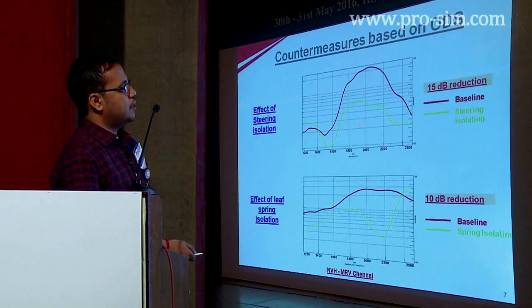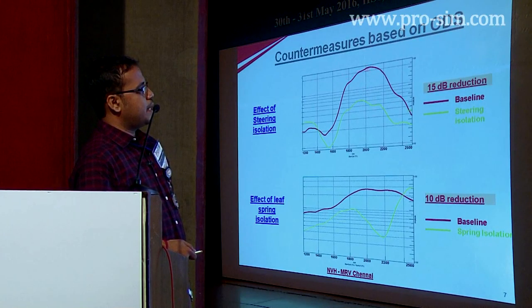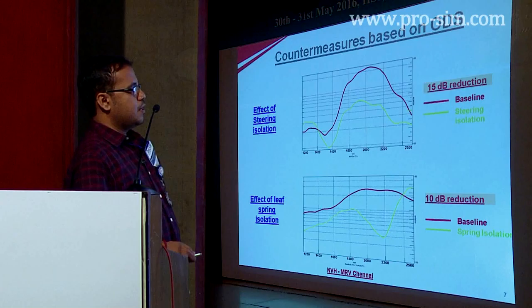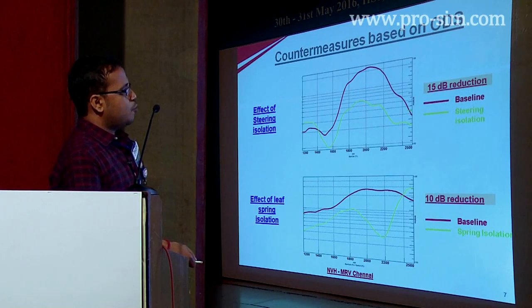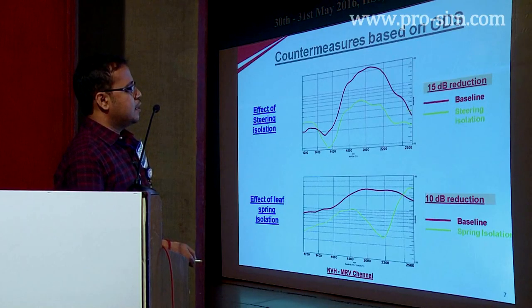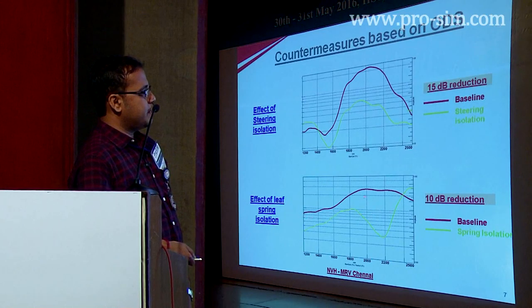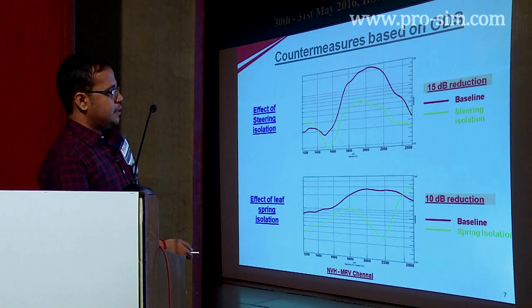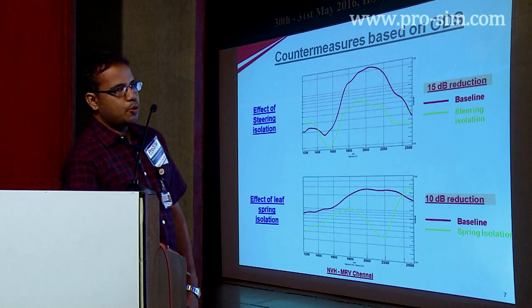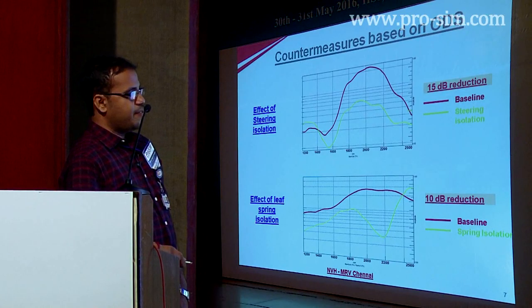One of the problematic zones was the steering vibration, which was much more objectionable at the problematic RPM. We introduced an isolation in the steering where it is mounted on our cross car beam, and with that we got around 15 dB reduction in the steering vibration level. Based on the transfer path analysis and ODS analysis, the leaf spring connection point was a major path, so we introduced an isolation in the leaf spring which reduced the vibration level at the problematic RPM by around 10 dB. However, we couldn't proceed forward since the introduction of leaf spring isolation deteriorated the vehicle handling performance.